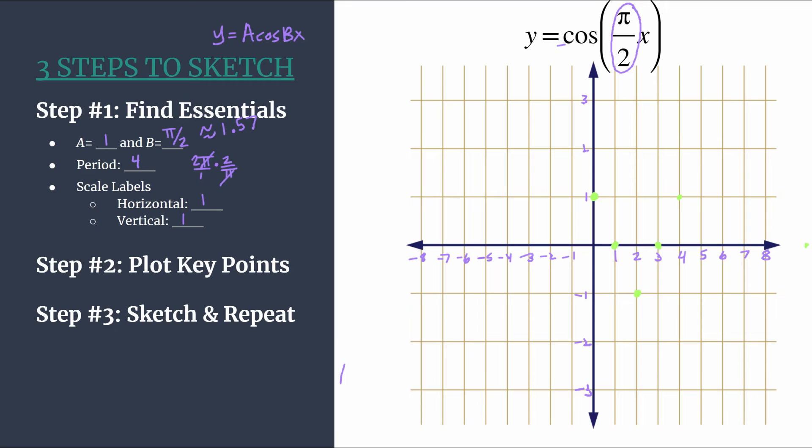So you've got your key points for one cycle. If you want, and I usually like to do this, I like to plot the first point in the next cycle, just so I have something to connect to. Moving on to step three. So I'm going to sketch this cycle. And here's our characteristic cosine curve. So we've got that. Let's repeat. Let's graph a few more cycles here.